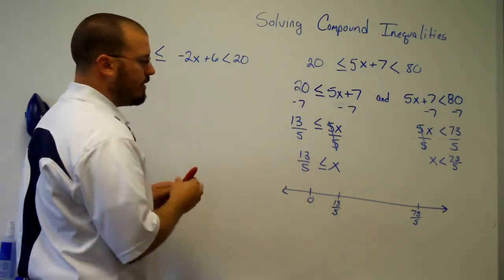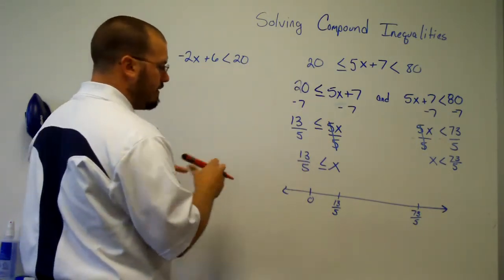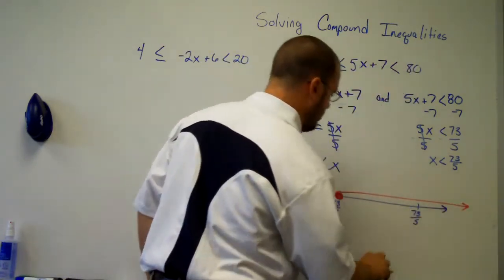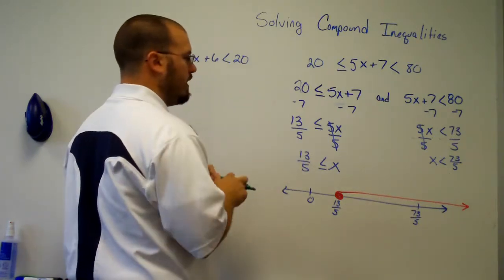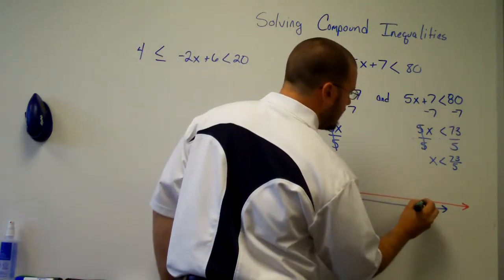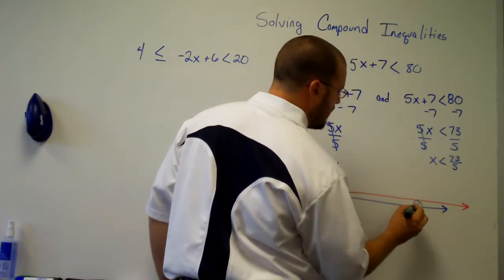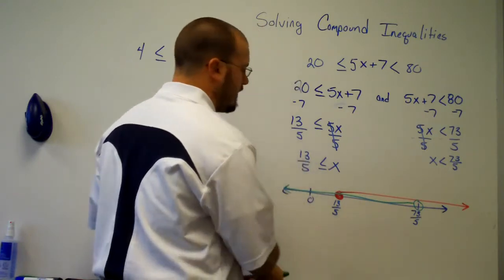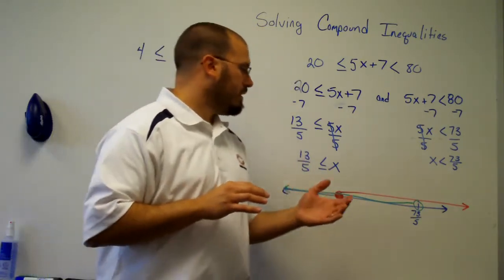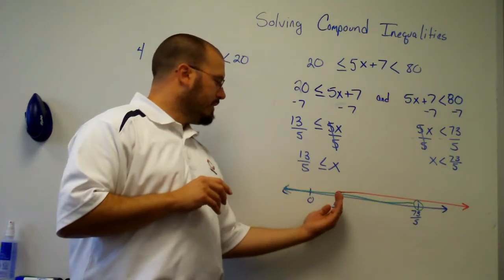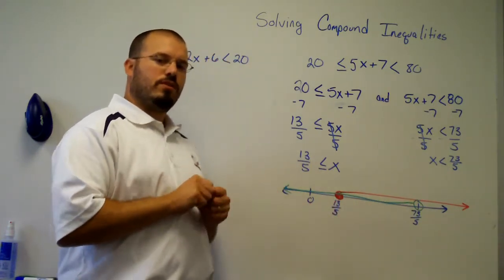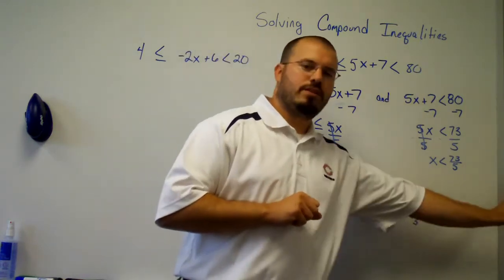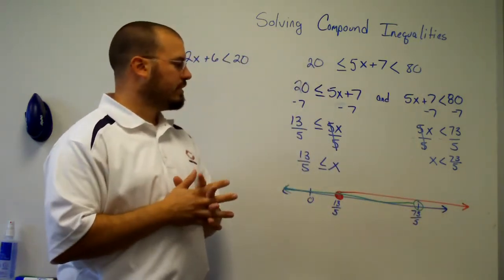So x is greater than or equal to 13 fifths — 'or equal to' means I'm going to shade it. And then x is less than 73 fifths, but not equal to, so I'm not going to shade that endpoint. Now there are really three parts to this graph: a piece to the left of 13 fifths, what's between 13 fifths and 73 fifths, and what is to the right of 73 fifths.